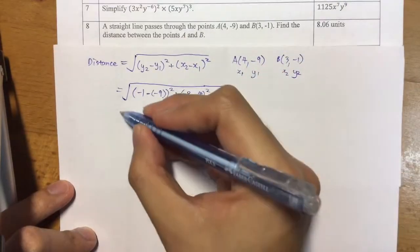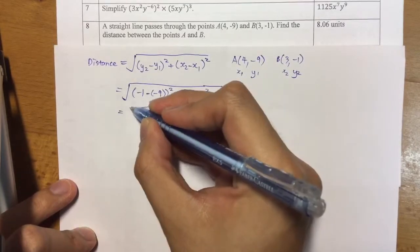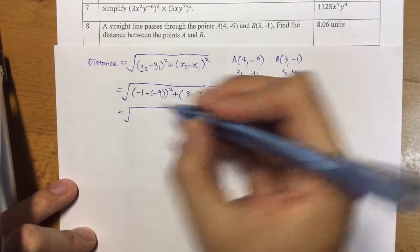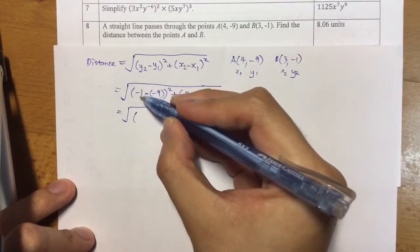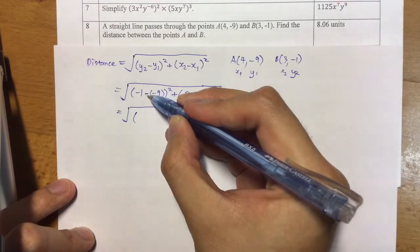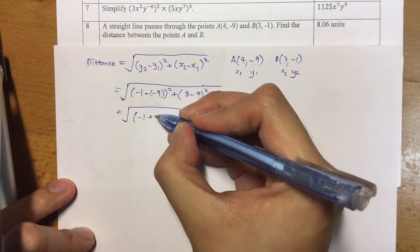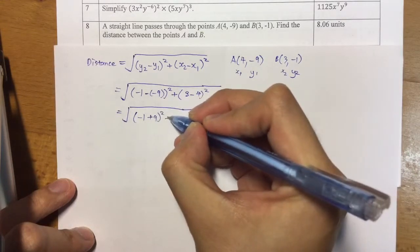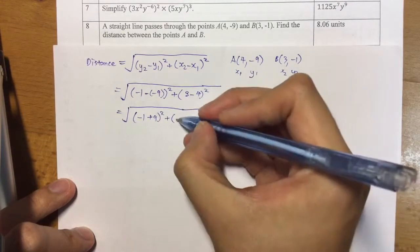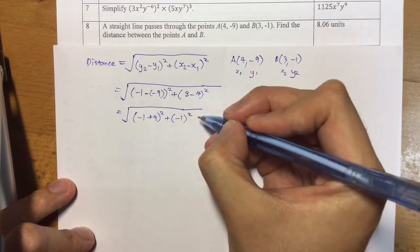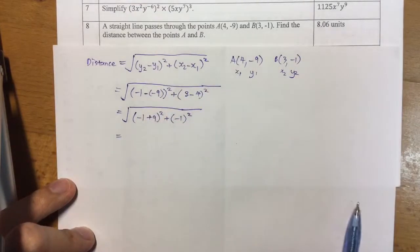Minus one subtract negative nine is actually minus one plus nine, squared. I can simplify this first. What comes next is using the calculator. I put the square root sign first, then the brackets.